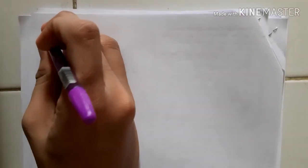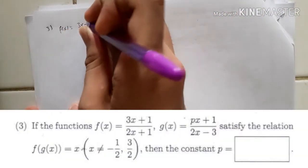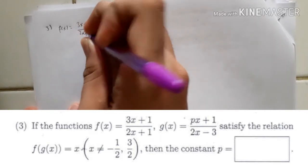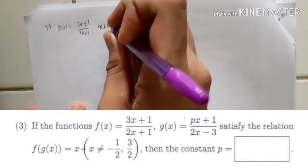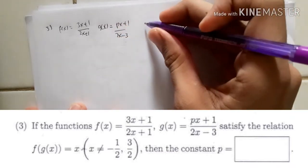Hello everyone, welcome to this Gakubo Maths B 2014, Part 1, Number 3. This is what we could call a composition function type question. Let's see the question: f(x) is (3x + 1) / (2x + 1), and g(x) is (px + 1) / (2x - 3).